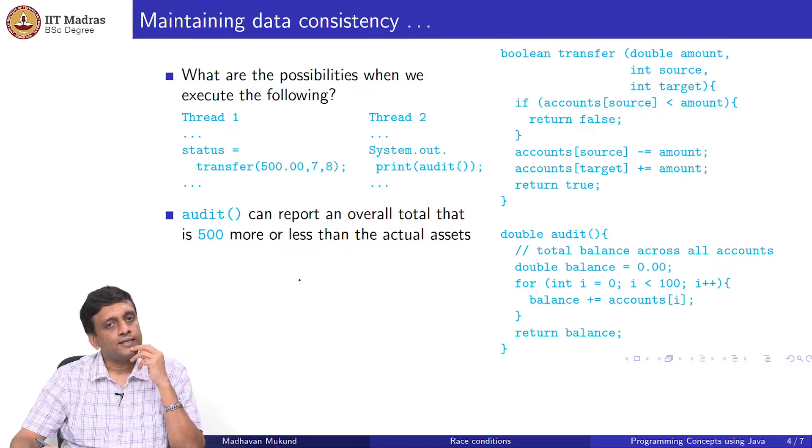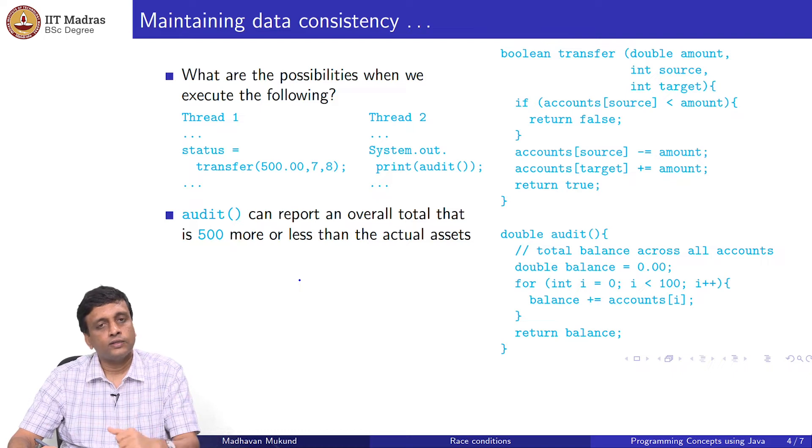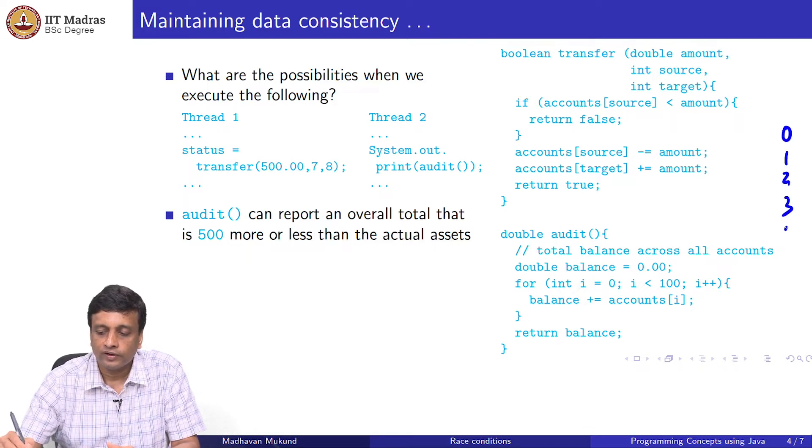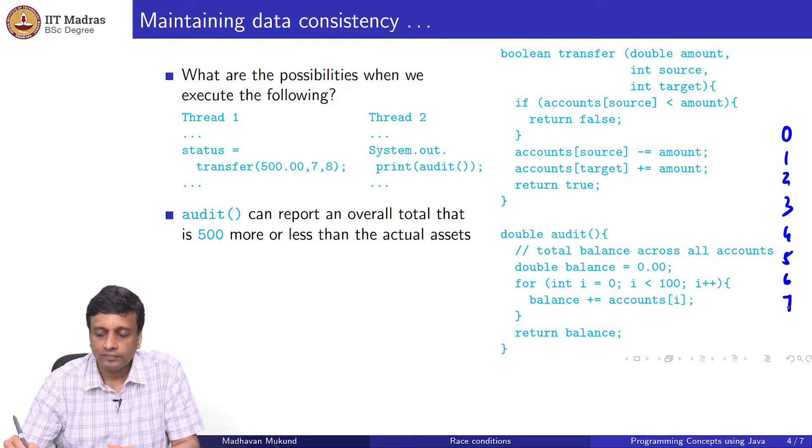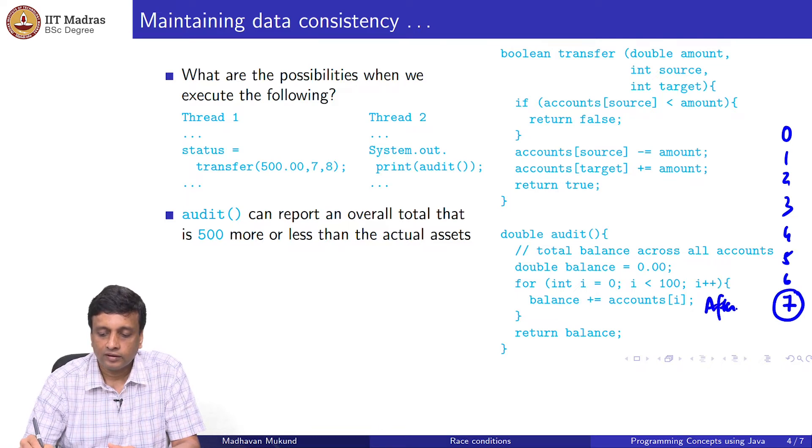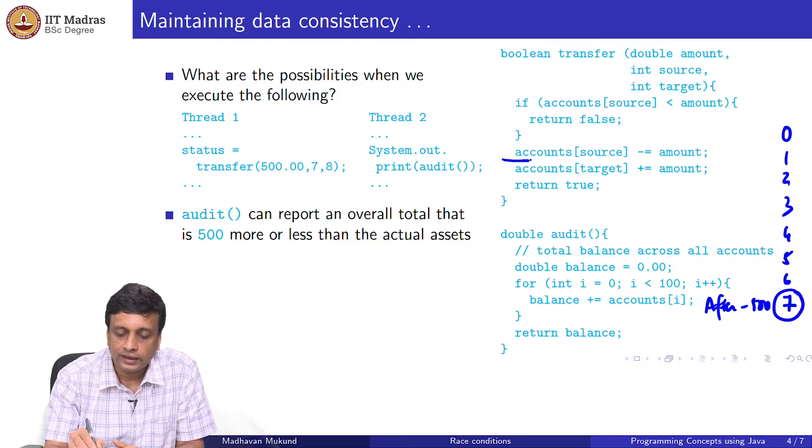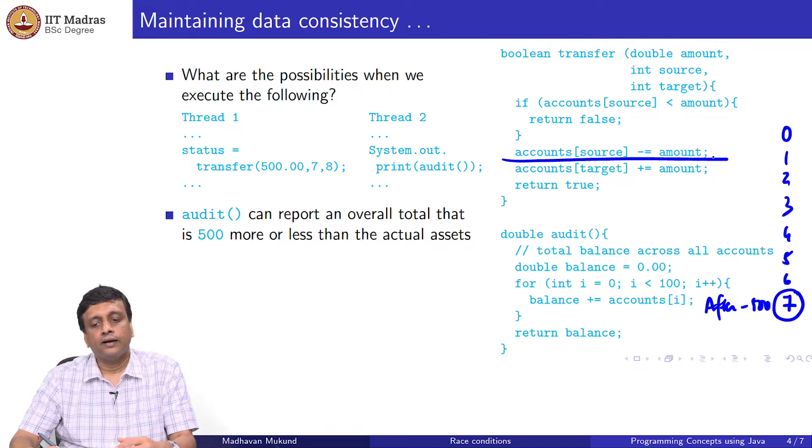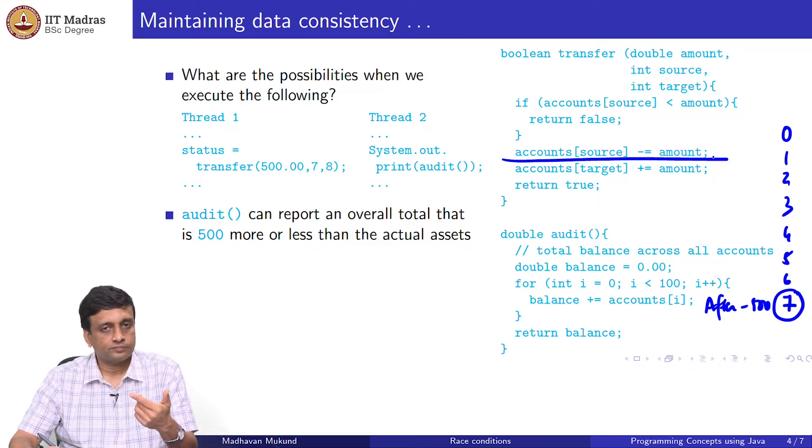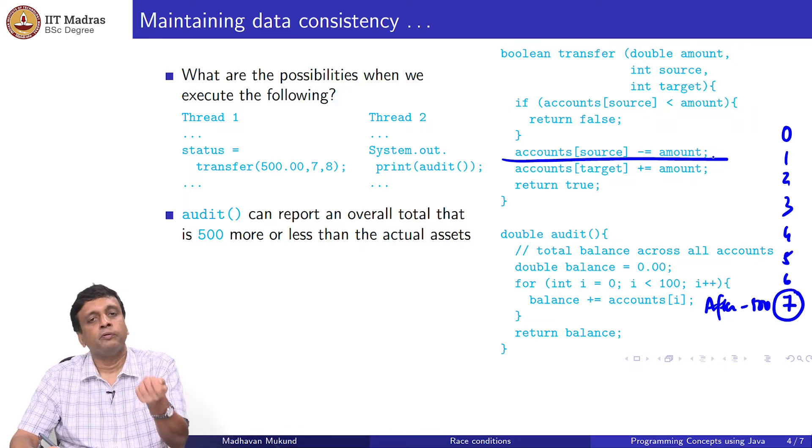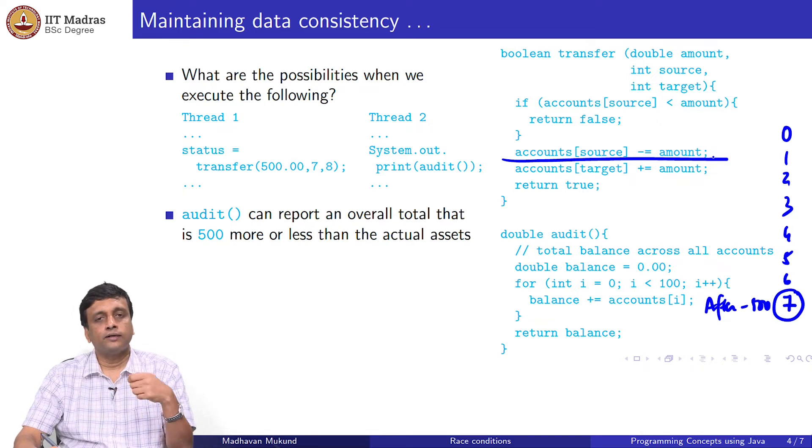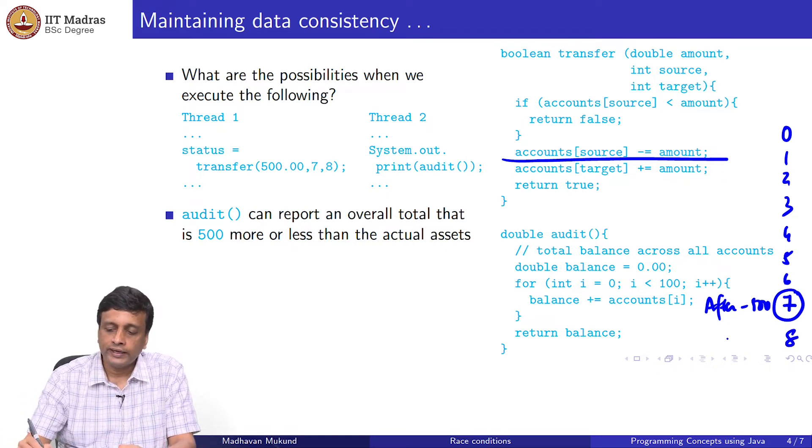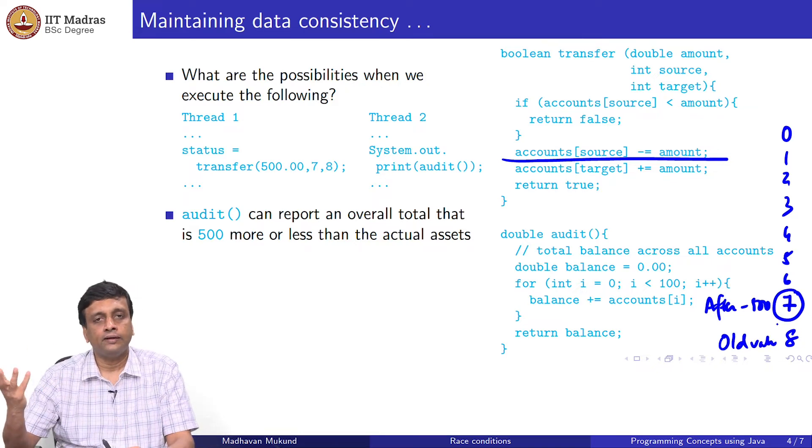I claim that the audit logically should give you the same answer. But it is not difficult to imagine why the audit can report 500 more or 500 less. Why would it report 500 less? Well, it really depends on how this accounting is done. If I am counting these accounts and audit is happening in parallel, audit is reading 0, 1, 2, 3, 4, 5, 6. Then when it reads 7, it reads after minus 500. In some sense, I am at this situation in my transfer. I read this money before the money is transferred—rather, after the money is removed from 7, but before it is transferred to 8.